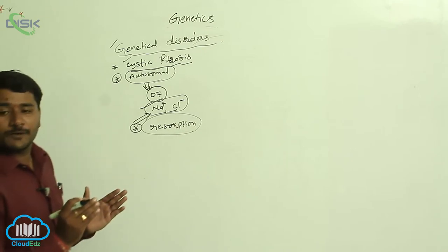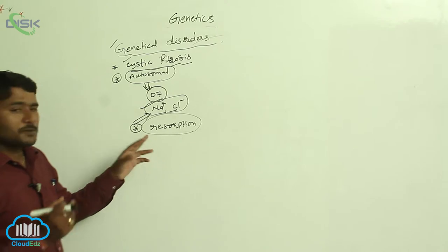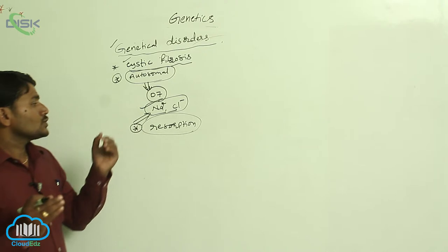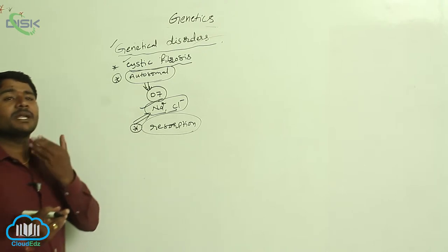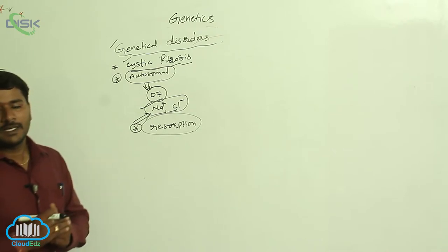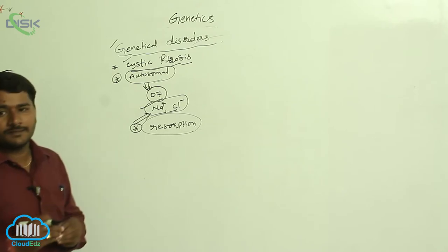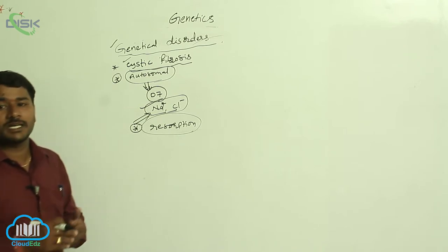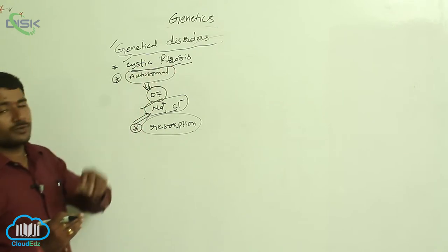Reabsorption is different from resorption. Reabsorption means absorbing; resorption means loss. So when sodium and chloride ions are lost, the membranes present in the respiratory tract, including the lungs and gastrointestinal tract, become more viscous, leading to cystic fibrosis.